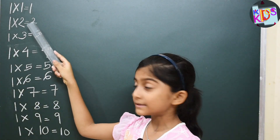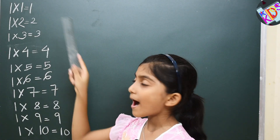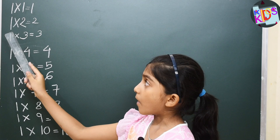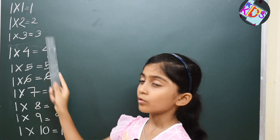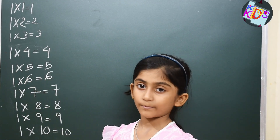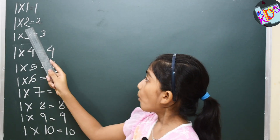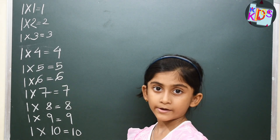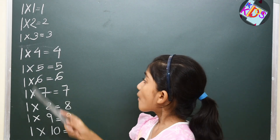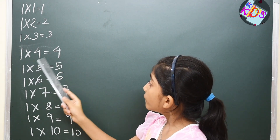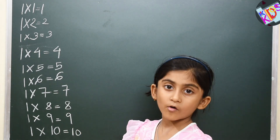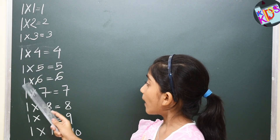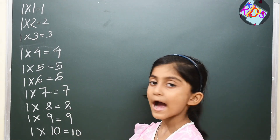One, one is a one. One, two is a two. One, three is a three. One, four is a four. One, five is a five.